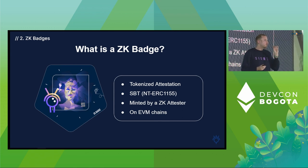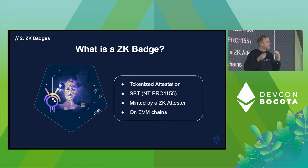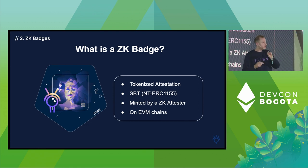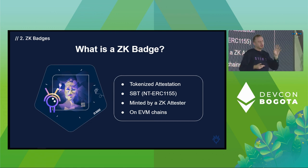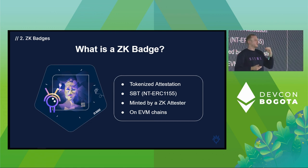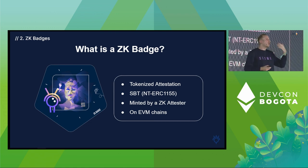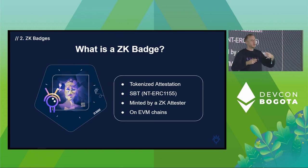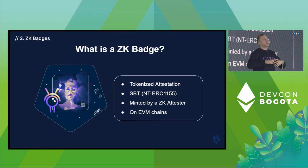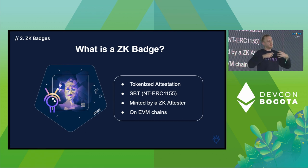A small nuance: these badges are ERC-1155. Each badge has a token ID in the contract, meaning each badge is sort of like an ERC-20, not really an NFT. For the same badge, you can have different balances, and the balance corresponds to the value of the attestation. A higher balance might mean you have more followers, or that your badge means more.